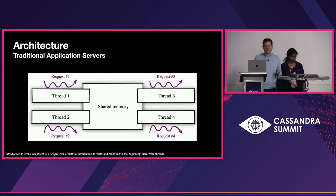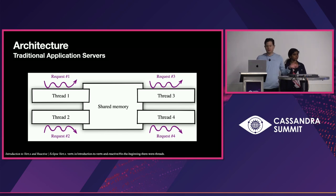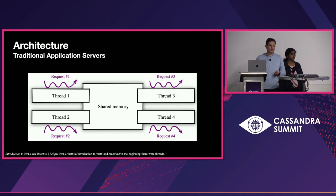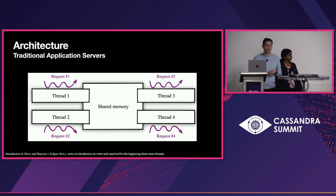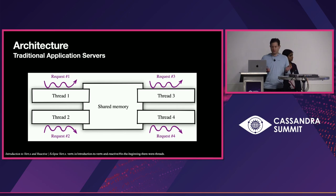In a traditional application server, we get a request and a single thread handles the request during the entire life cycle of that request. That means if we do some database access, go to the file system, talk to S3, or have some blocking I/O operation that is very expensive, that thread is going to be wasting CPU time.